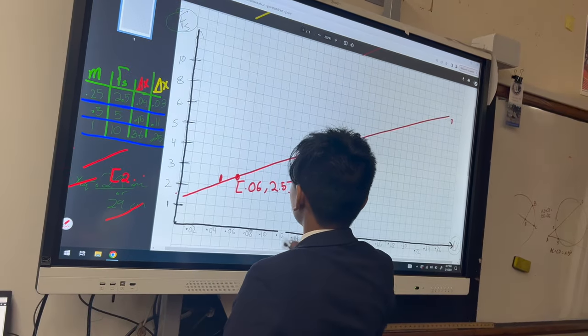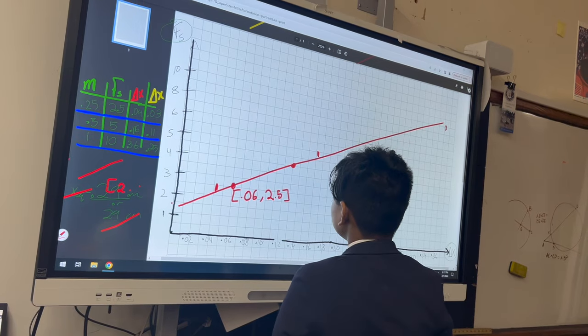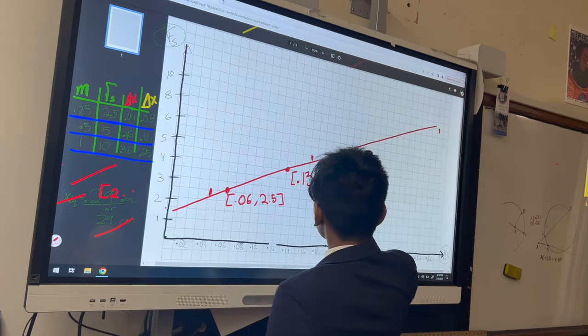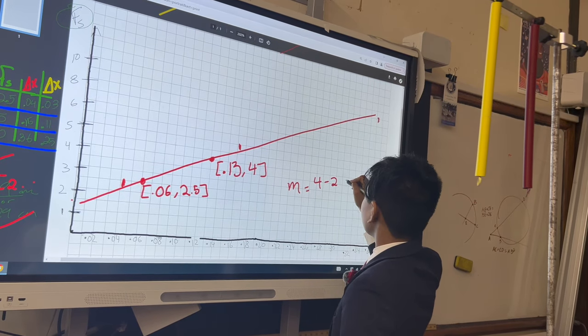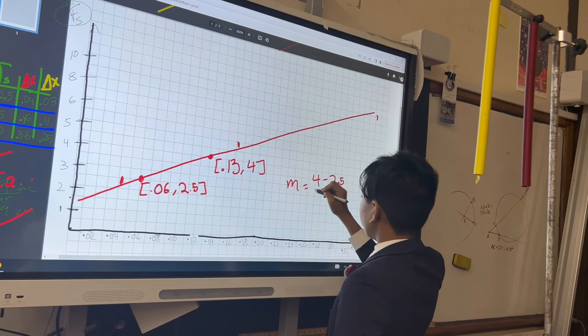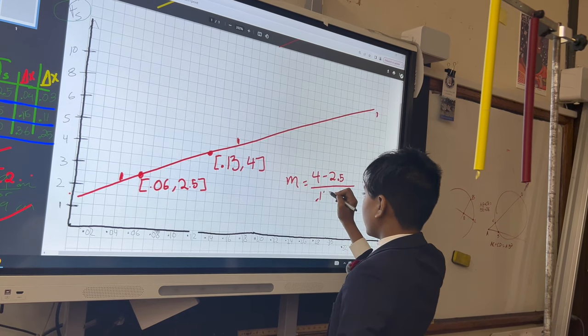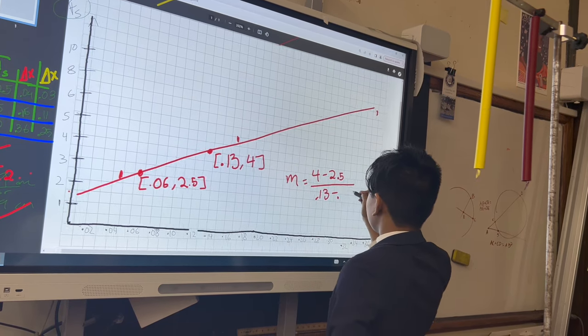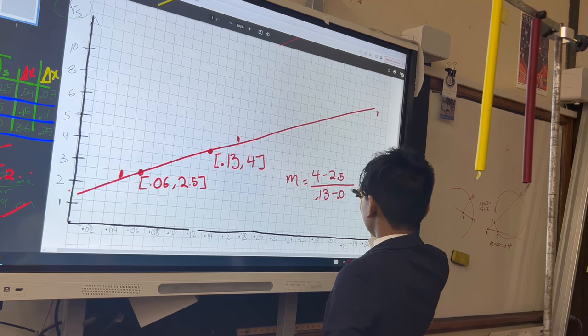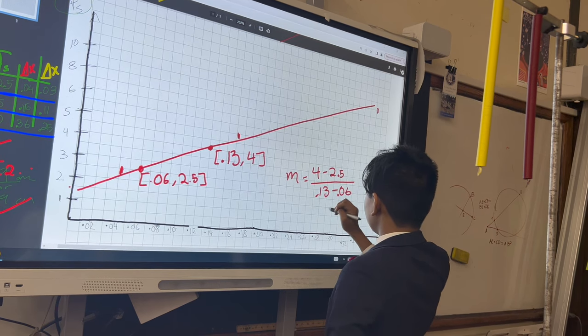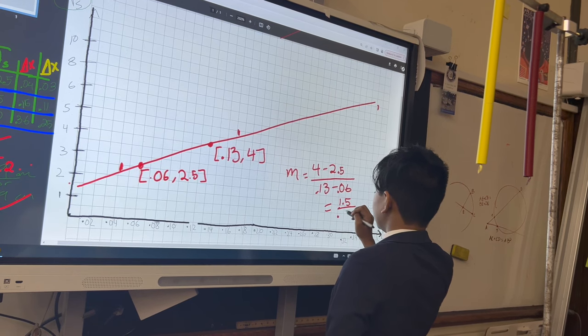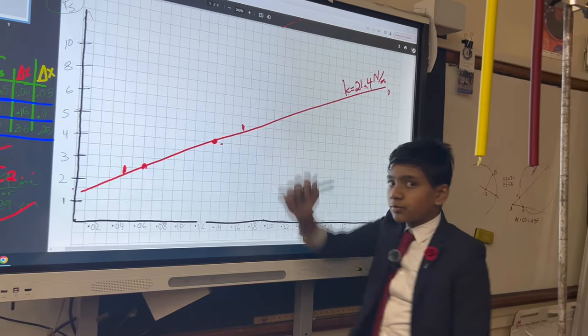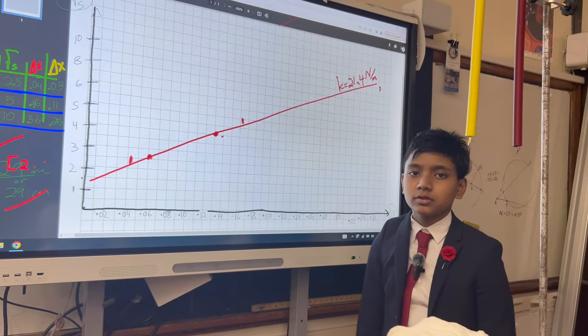The coordinates are 0.06 and 2.5. All right, 4 minus 2.5 divided by the run, 0.13 minus 0.06. Why? Why do you have to do this to me? 1.5 over 0.07. Then the spring constant is 21.4 newton meters.